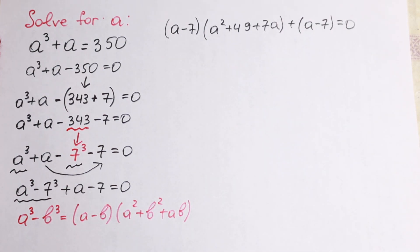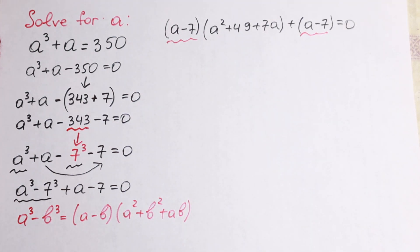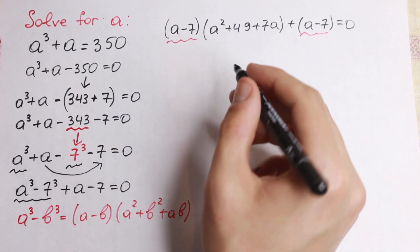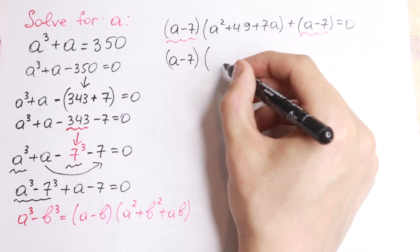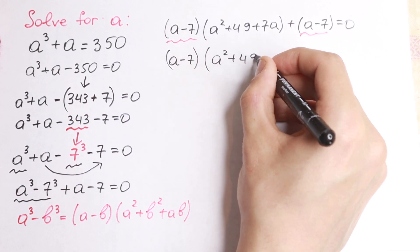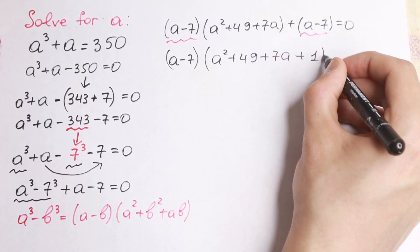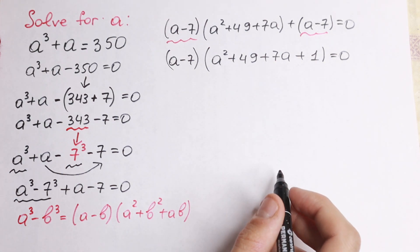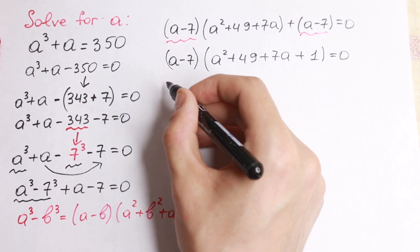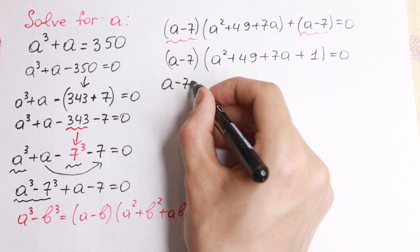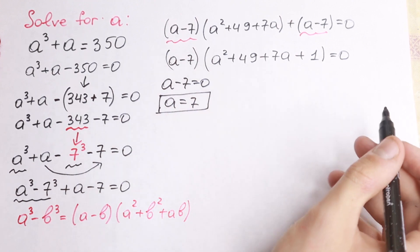As you can see, we now have a minus 7 and a minus 7. It will be really good to factor out this a minus 7. So if we factor out a minus 7 we will have in another parentheses a square plus 49 plus 7a plus 1, equal to 0. We can easily write that a minus 7 equals 0, and from here a equal to 7 will be our answer to this equation.